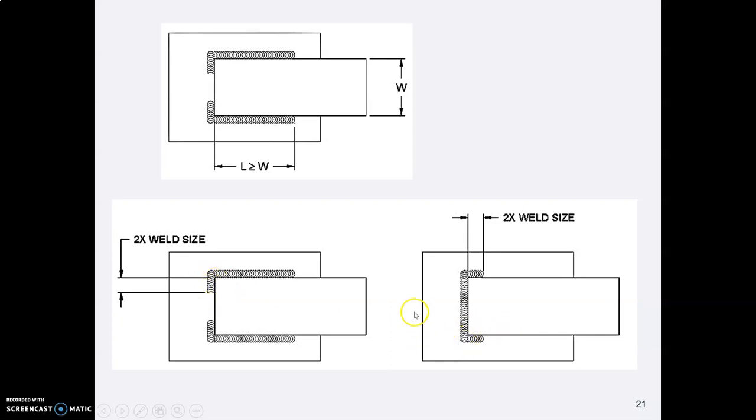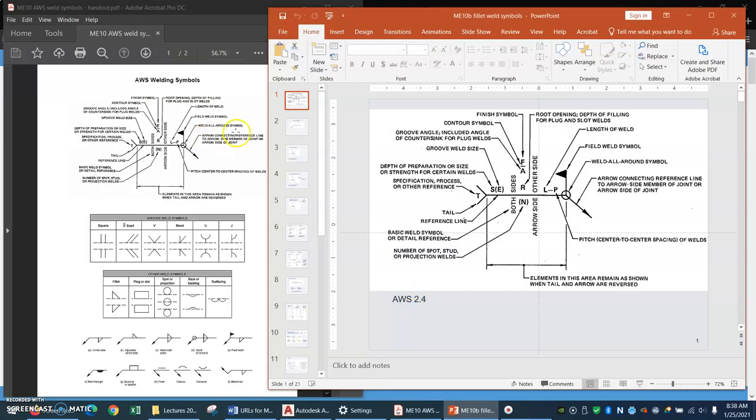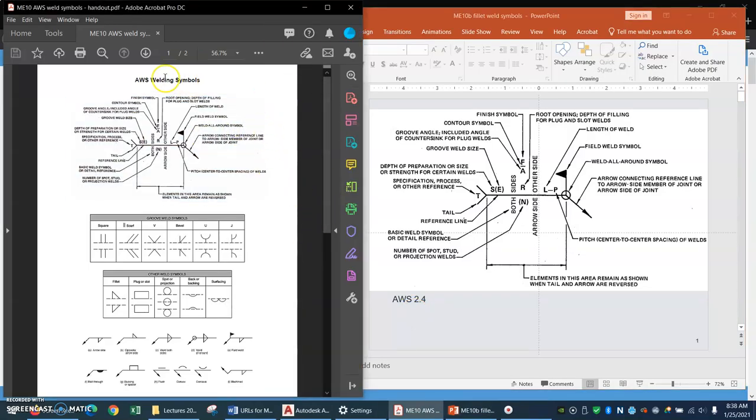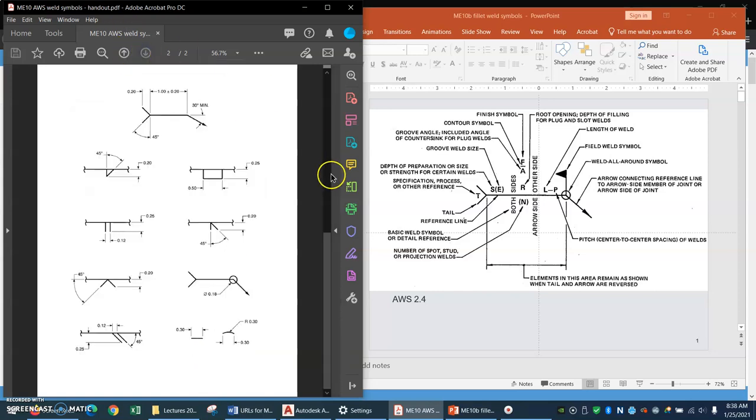I wanted to show you the handout that I have given you. It's a PDF here and it has this AWS roadmap followed by a listing of each of the weld types and their symbols and some additional symbols at the bottom, like the all-around and some finished symbols. On the second page of this handout are the weld sizes from AWS so that you know how to make your symbols.